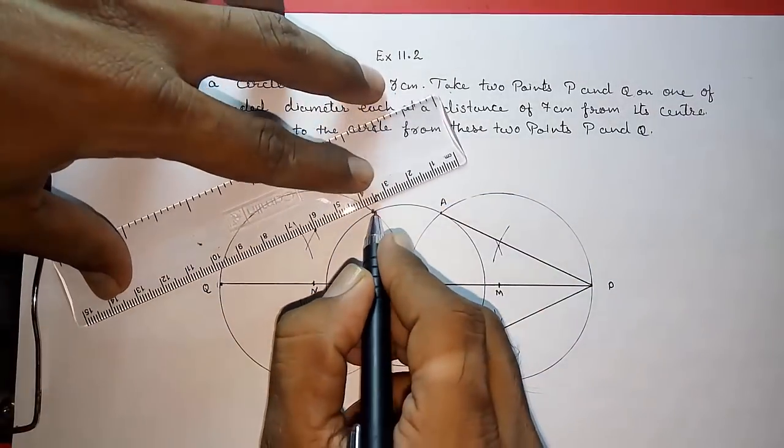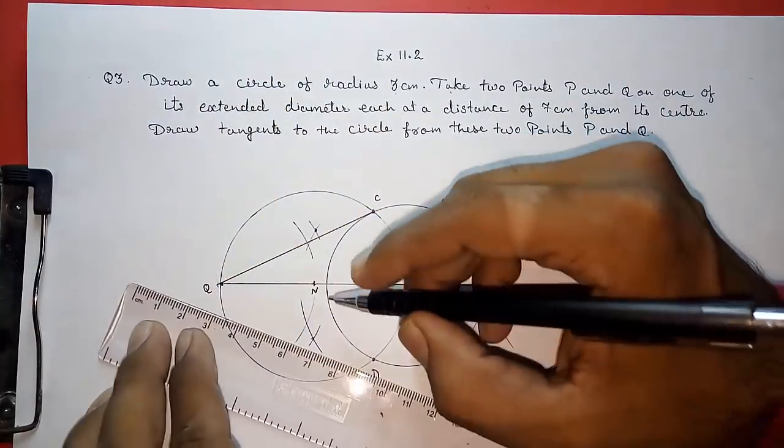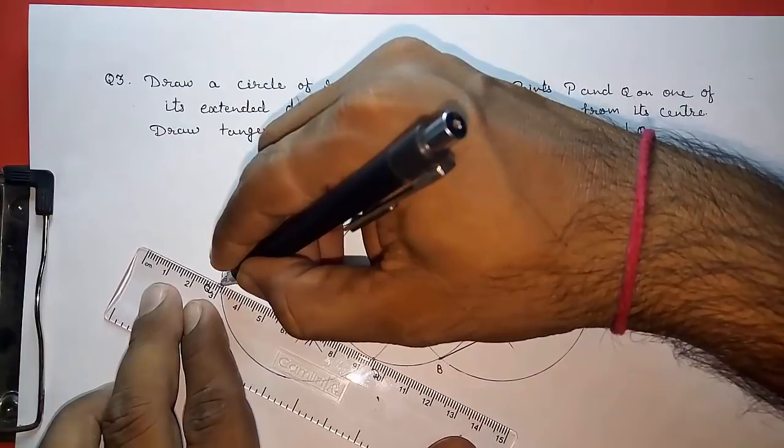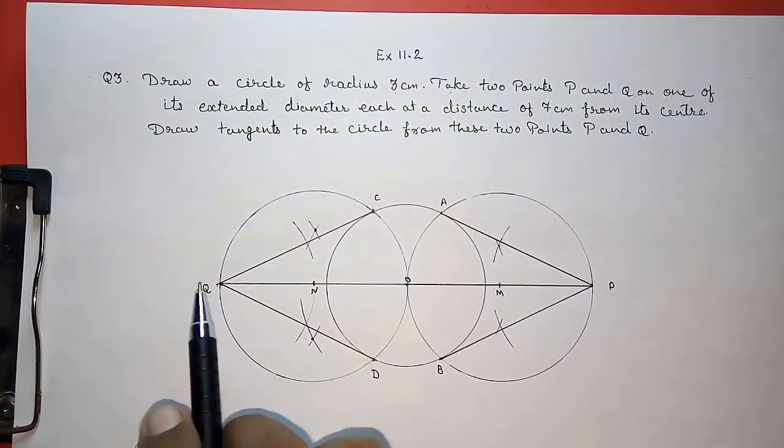Now join C to Q and Q to D. So these are also our tangents from this point Q.